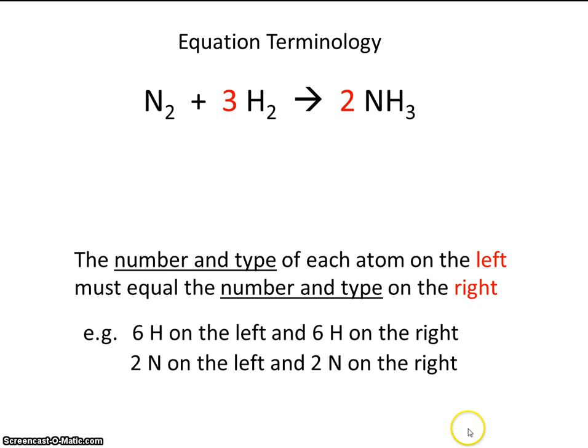We also have to make sure that nitrogen is balanced. We have 2 nitrogens on the left and 2 nitrogens on the right. Here's our 2 nitrogens on the left, and here are our 2 nitrogens on the right. So this coefficient here of 2 applies to both the nitrogen and the hydrogen.